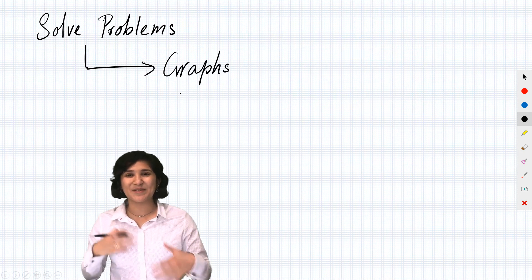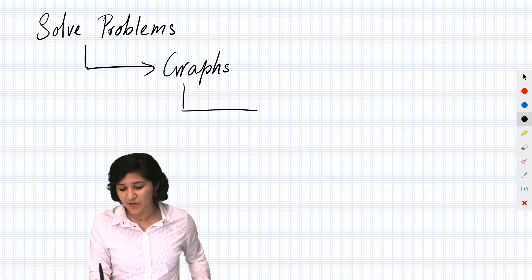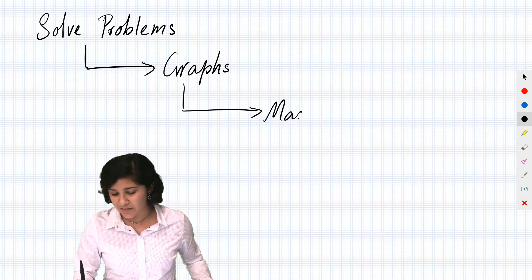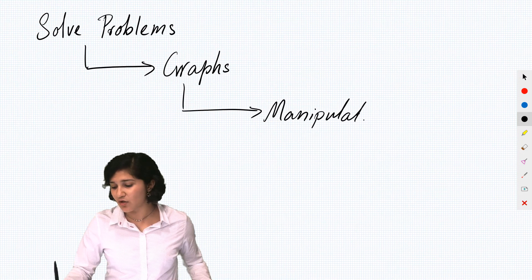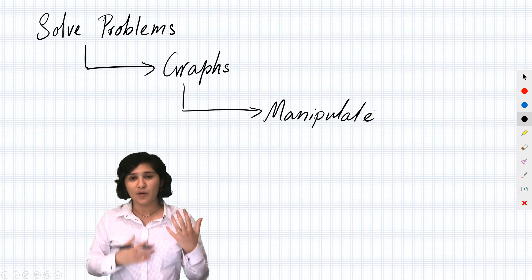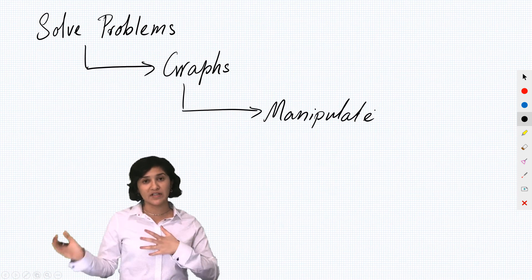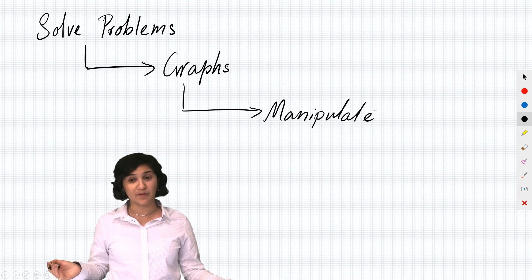But to graph the quadratic equations, we need to be able to manipulate the equations because the form that I've just showed you is not that easy to graph directly. We need to change it around into different forms so that we know what the graph looks like.